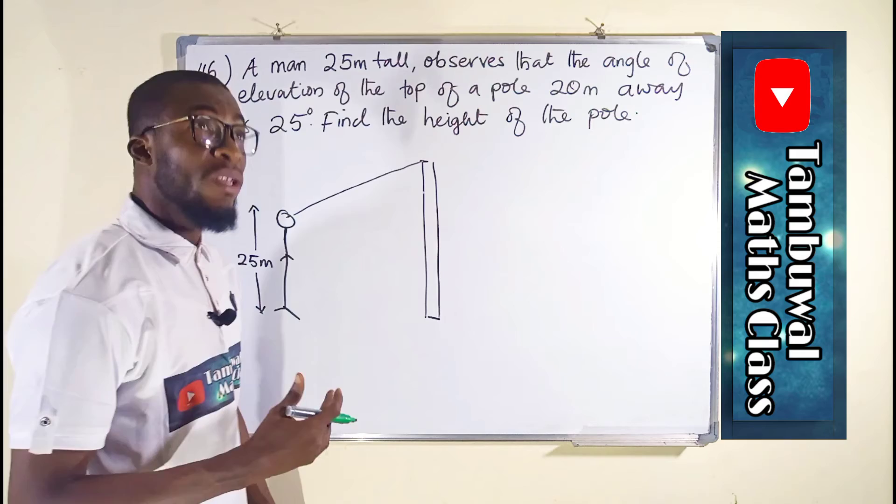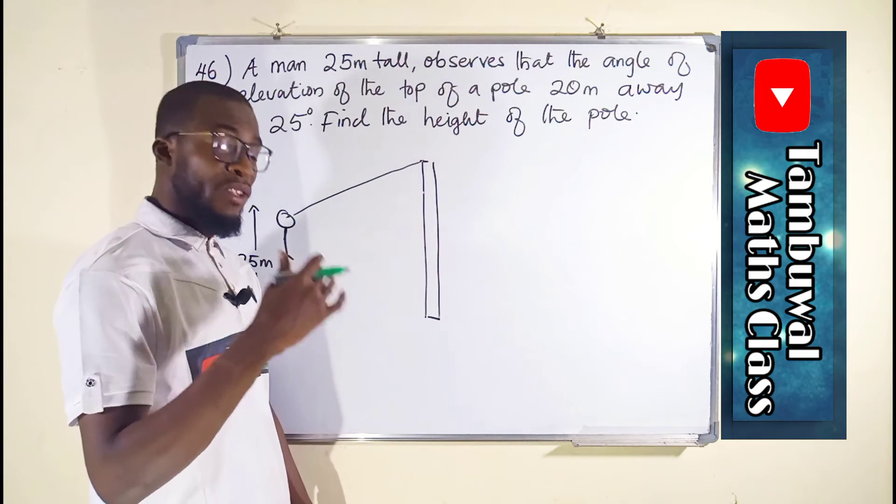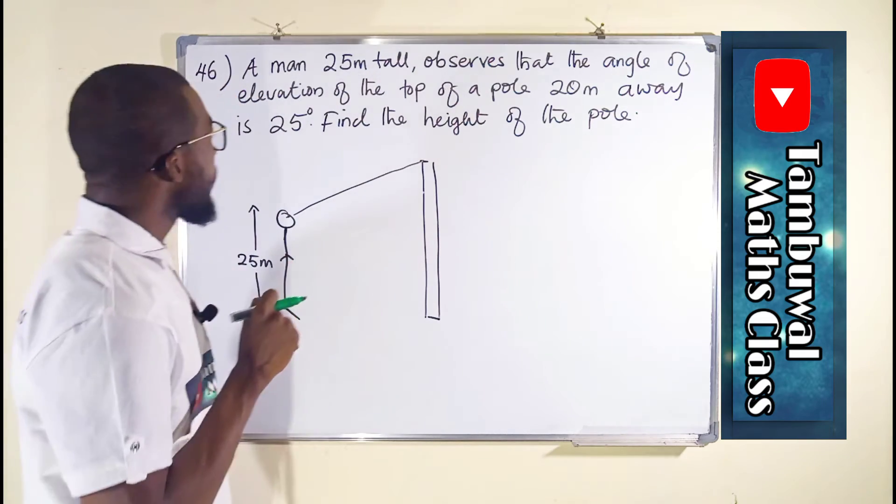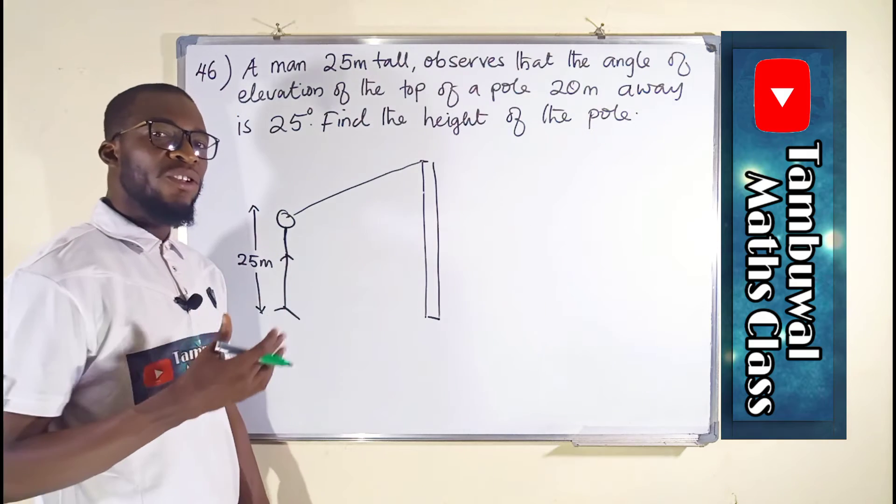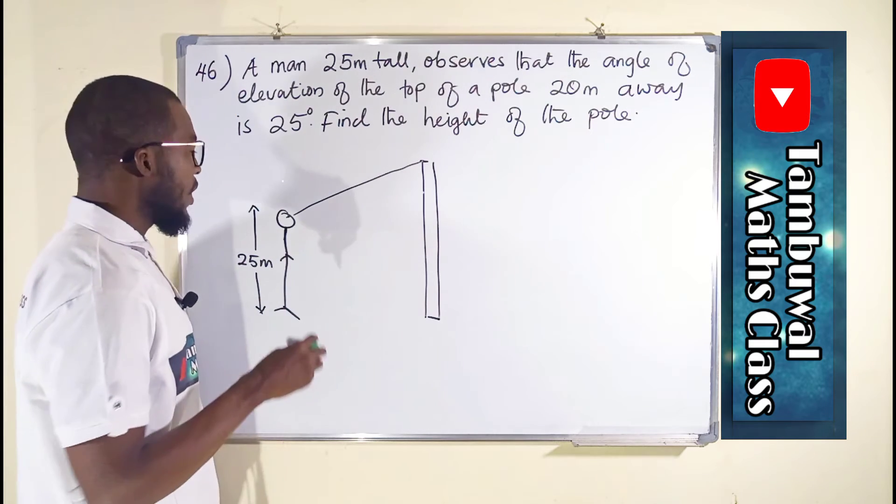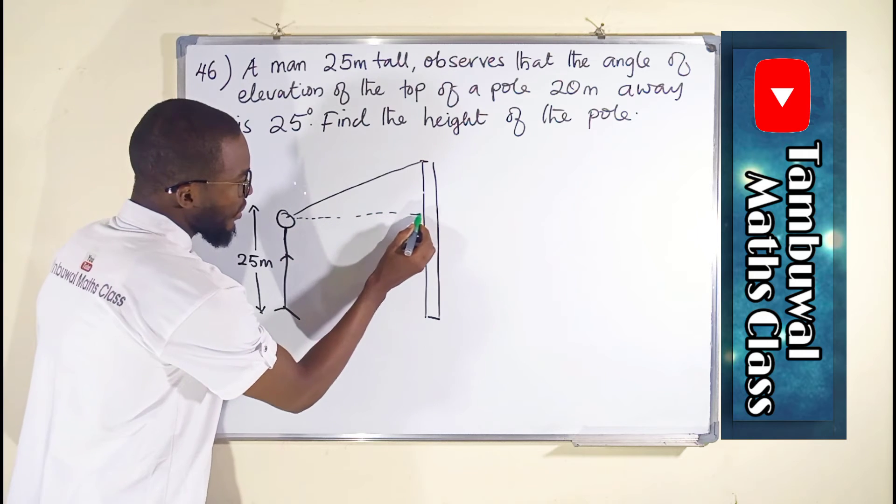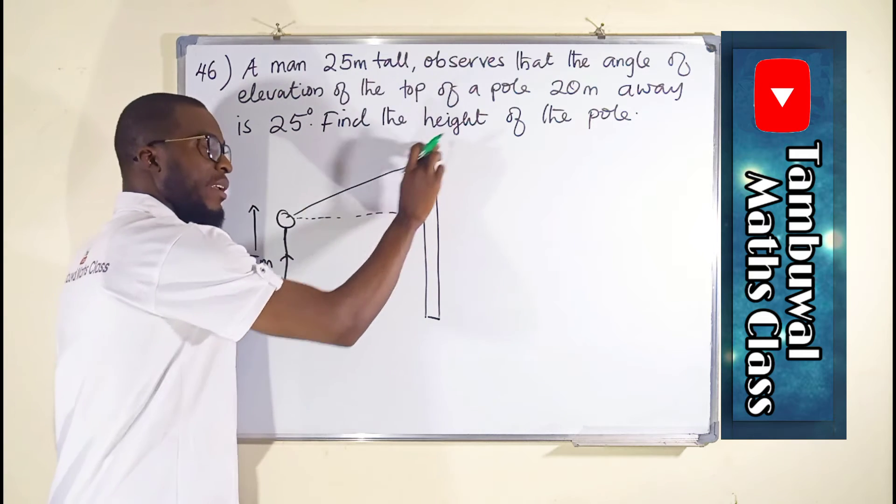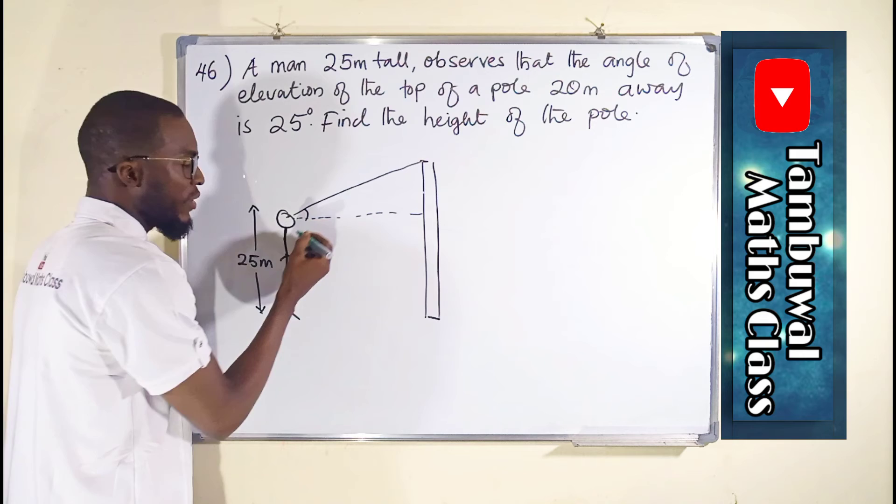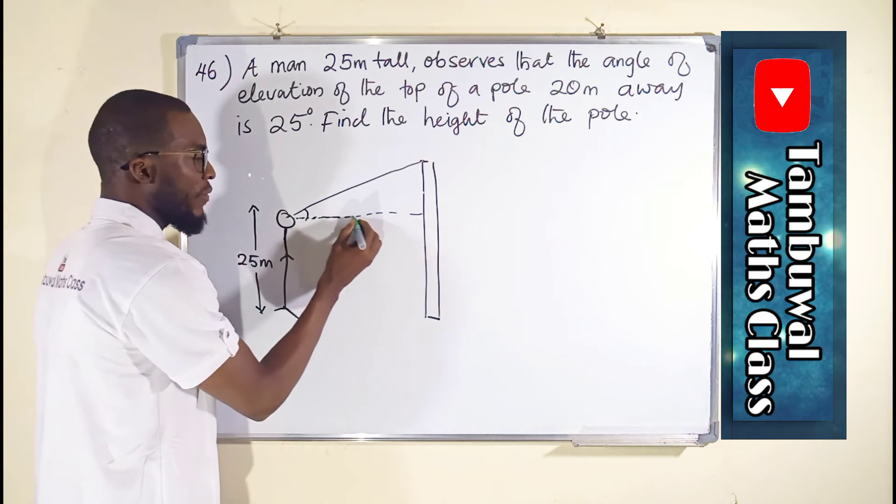Because we are talking about elevation, you have to raise up. If it is depression, you drop down. And angle of elevation is always measured as an angle between the horizontal line. This is the horizontal line. And the point of sight, the angle between them is the elevation, angle of elevation.